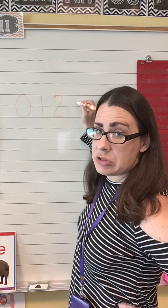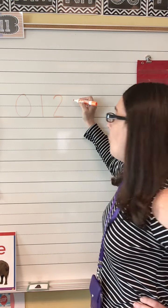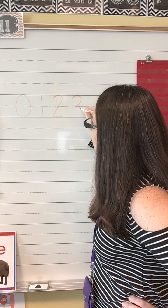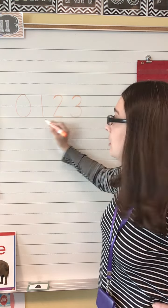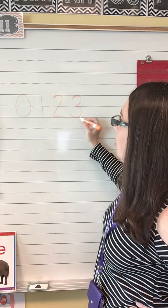What comes after two? Three. Go around a tree, around a tree. There's the number three. So zero, one, two, three.